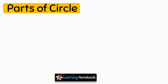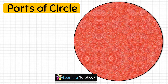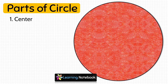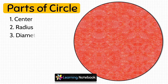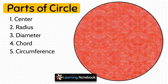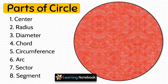Now we have got a circle with us. In this video we are going to learn about the different parts of a circle, which are: center, radius, diameter, chord, circumference, arc, sector, and segment.